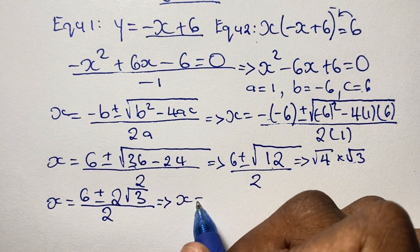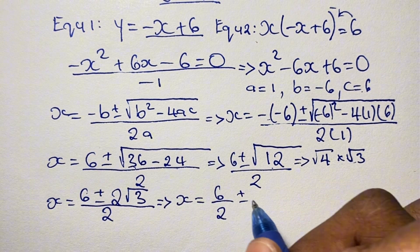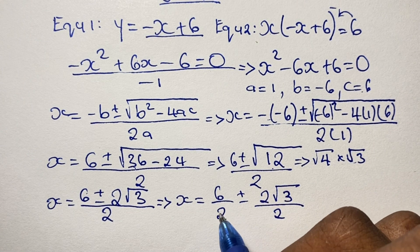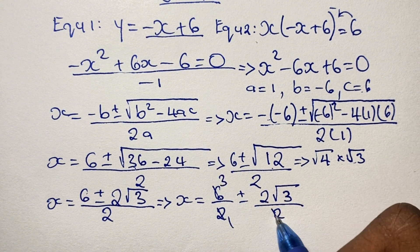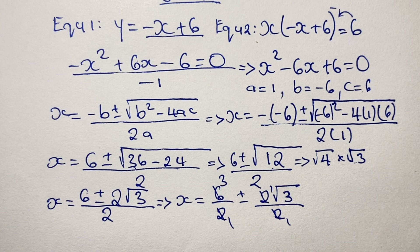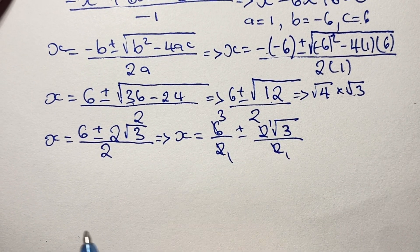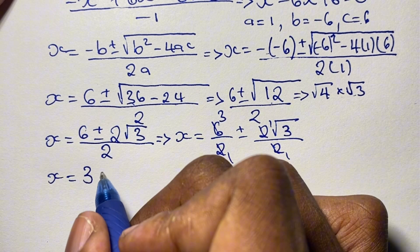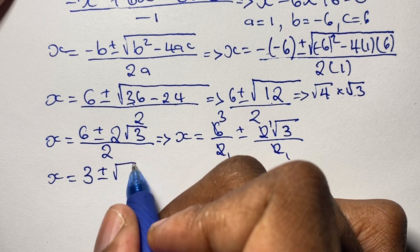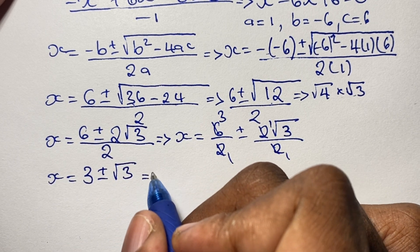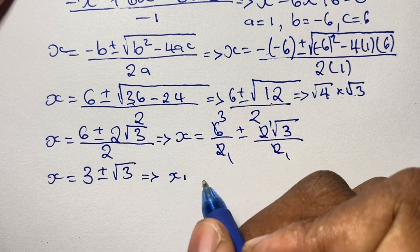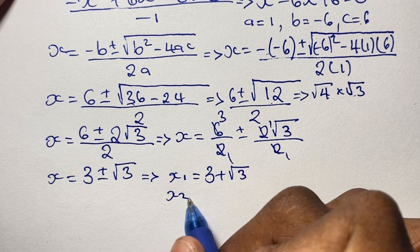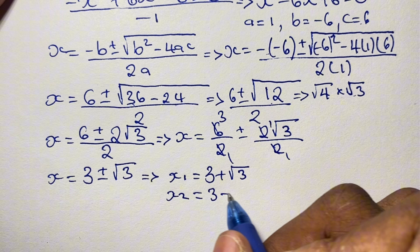From here, we simplify by splitting the fraction: 6 divided by 2, plus or minus 2 times the square root of 3 divided by 2. Reducing each fraction to lowest terms — 6 over 2 is 3, and 2 over 2 is 1 — we get x is equal to 3 plus or minus the square root of 3. So our two solutions for x are: x₁ equals 3 plus the square root of 3, and x₂ equals 3 minus the square root of 3.